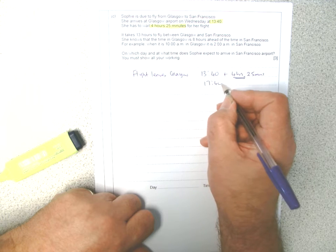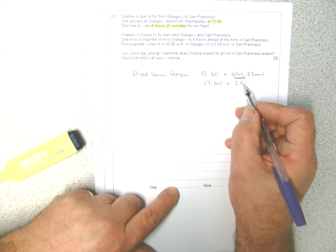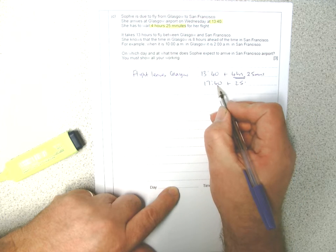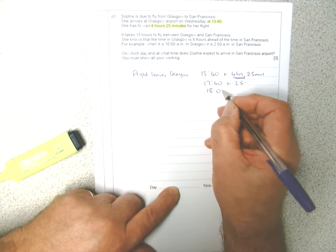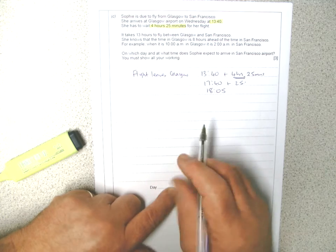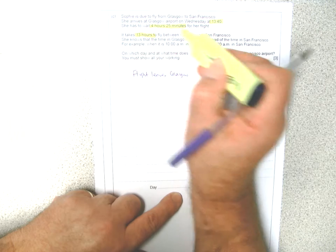...it goes to 1740. Then add on the 25 minutes. So 20 minutes will take it to 1800, and then another five minutes, so it's leaving at 1805. Now the flight is taking 13 hours.